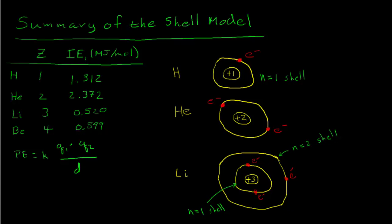Here's some ionization energy data. In our table we have the first four atoms of the periodic table: hydrogen, helium, lithium, and beryllium. Their atomic numbers are one, two, three, four. Atomic number tells us the number of protons in the nucleus, and each proton has a plus one charge, so Z also tells us the positive charge in the nucleus. This third column is the first ionization energy, measured in units of megajoules per mole.